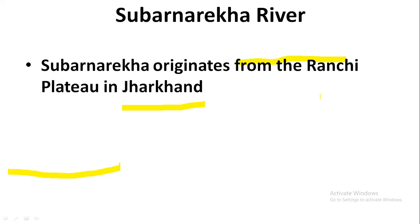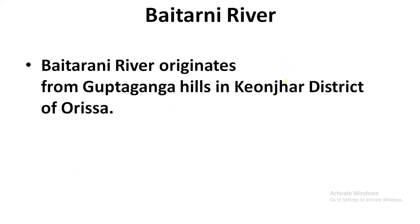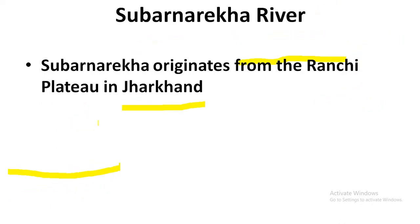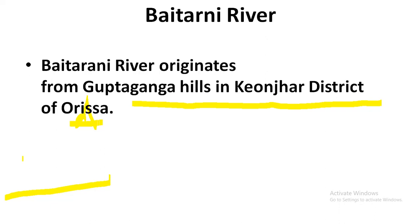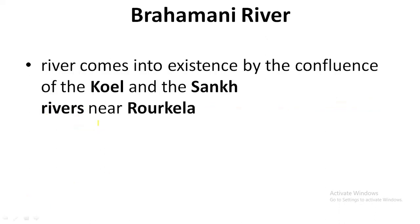Next is Brahmani river. Brahmani is a very important river that comes into existence by the confluence of two rivers — Koel and Sankh — near Rourkela. After that confluence, the river is called Brahmani. Next, Mahanadi river originates from Dandakaranya in Raipur district of Chhattisgarh.